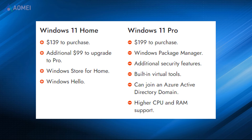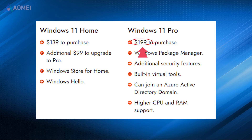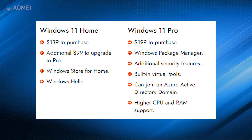Number 3: Cost. Windows 11 Home costs $139, while Windows 11 Pro is priced at $199, which is $60 more expensive than the Home Edition. If you start with the Home Edition but later decide to switch to the Pro Edition, there is an additional $99 fee for the upgrade. However, if you are upgrading from Windows 10 to Windows 11 Home, the upgrade is free of charge.